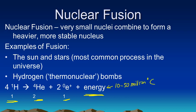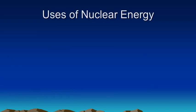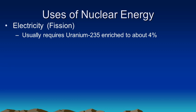Let's talk about some uses of nuclear energy. We already talked about how it can be used for electricity. That's the fission process. As we said, this usually requires uranium and a very specific isotope of uranium. Uranium-235.